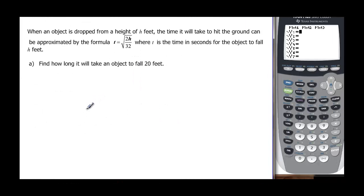All right, let's look at another example. When an object is dropped from a height of h feet, the time it will take to hit the ground can be approximated by this formula: t equals the square root of 2h over 32, where t is time in seconds for the object to fall h feet.